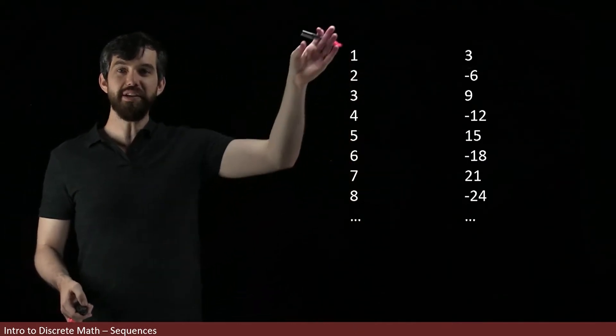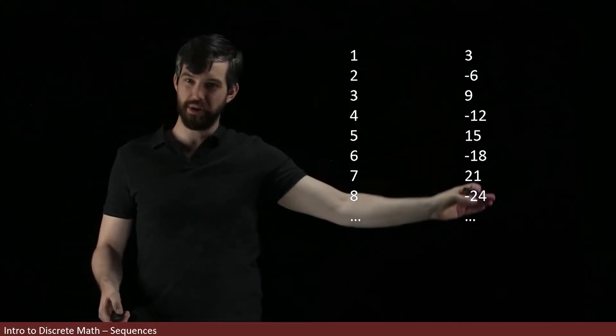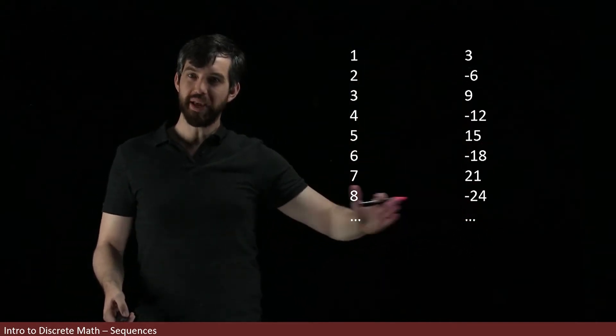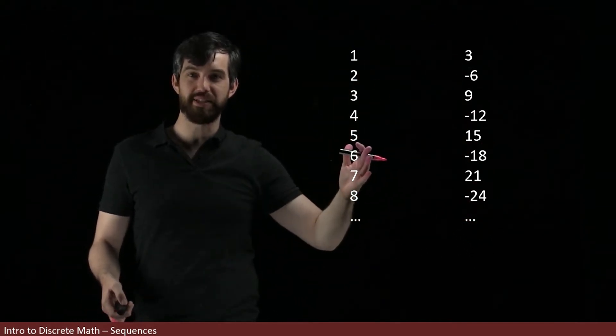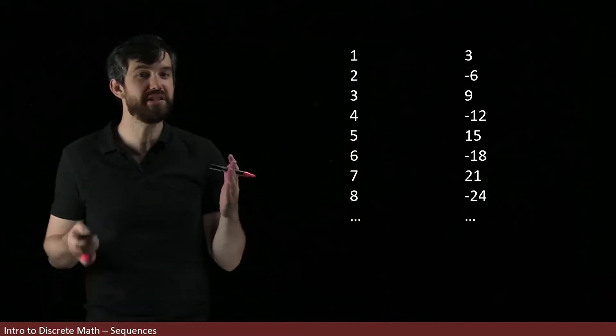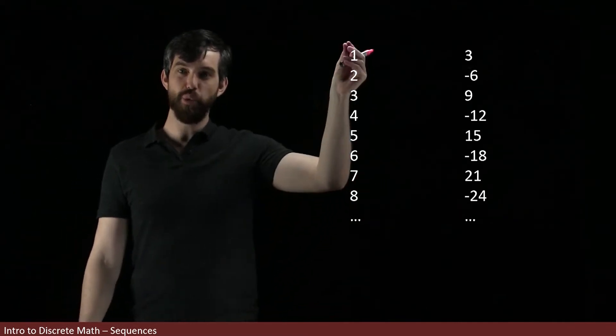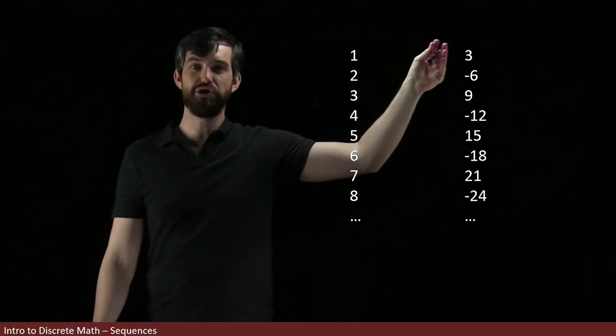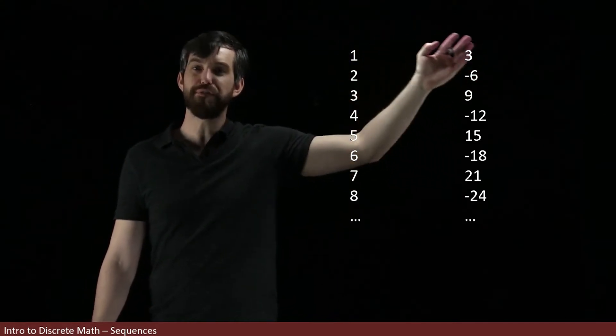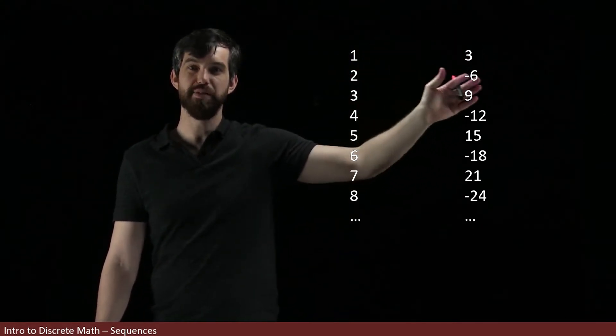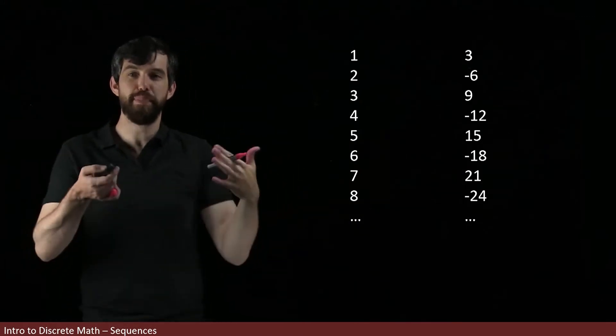So we can think of these as two different sequences. But because I sort of line them up in this nice way, we should have this association that the 1 over here is associated to the 3 in the sense that they're both the first terms. And the 2 here and the -6 are associated in the sense that they're both the second terms.